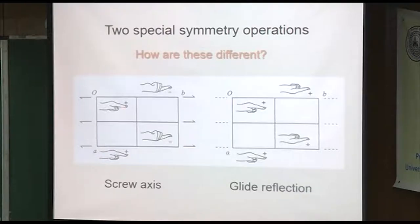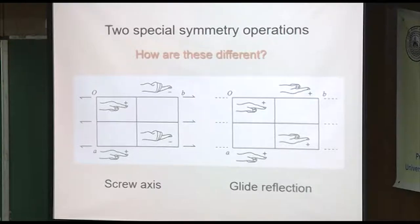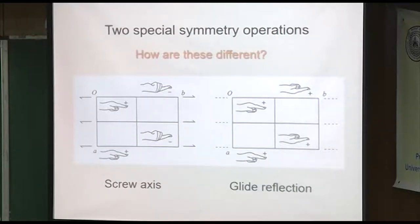Starting here, this symbol is the symbol for two-fold rotation, and the plus means it's above this plane. As you do the two-fold rotation, the hand goes around to the other side and then it moves by a half translation. Down here you're seeing the same thing again — it begins in the unit cell below, but because of the screw axis, it ends up back in this original unit cell.